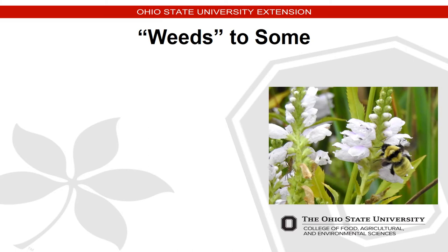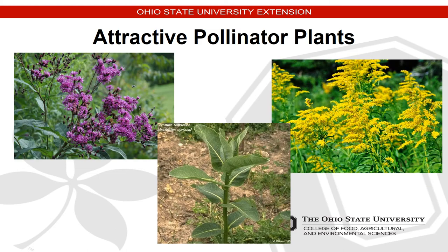What seems to be a weed to some may actually be an incredibly good pollinating plant or food resource to many of these beneficial organisms. Here you can see a large bumblebee using obedient plants. Things that might be considered weeds, such as ironweed, milkweed, and goldenrod, all provide an opportunity to feed at different times of the growing season.